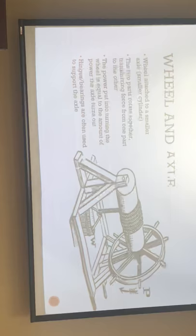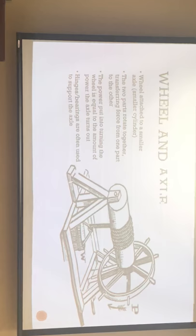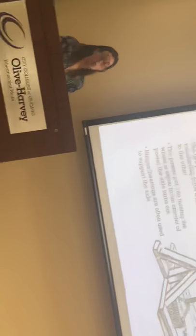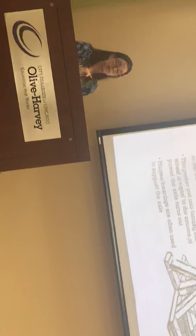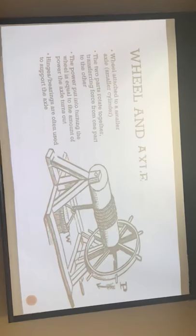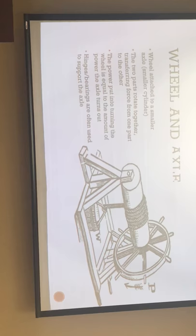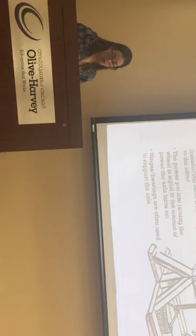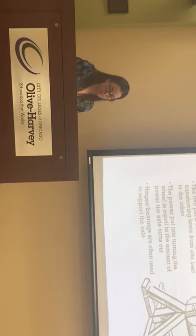The wheel and axle consists of a wheel attached to a smaller cylinder called an axle. The two parts rotate together and transfer force from one to the other. Exerting force on the wheel transfers that force into the axle — for example, at a well, the turning of the wheel creates the force needed to lift a bucket of water. The power put into turning the wheel equals the power the axle outputs. Hinges and bearings support the axle for structural stability.